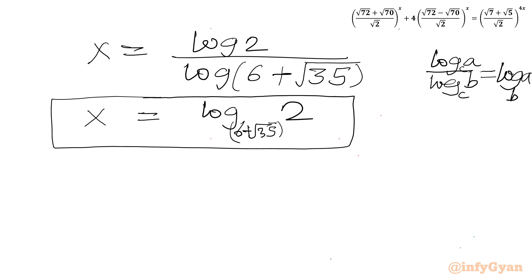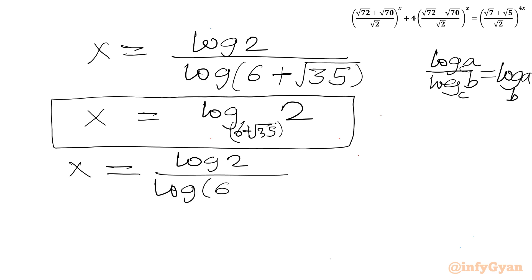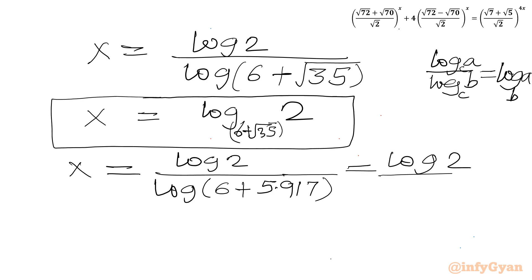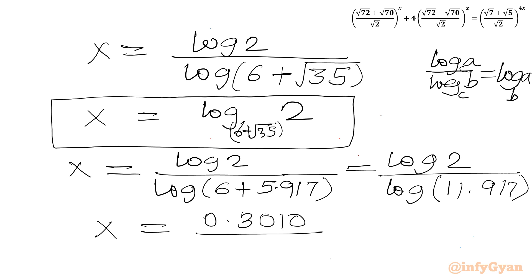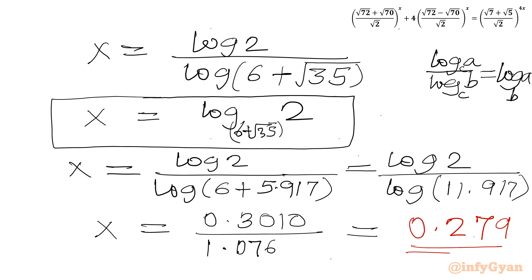Applying numerical values: 6 + √35 ≈ 11.917, so x = log 2 / log 11.917 ≈ 0.3010 / 1.076 ≈ 0.279. So in decimal the answer is approximately x ≈ 0.279, and in exact form x = log_(6+√35)(2). I hope you liked this video — thank you so much for watching!